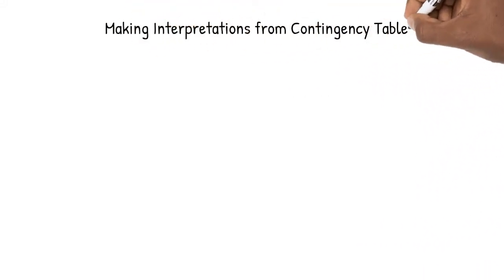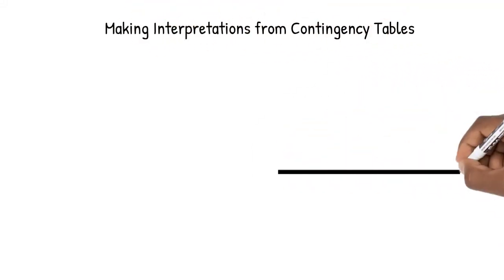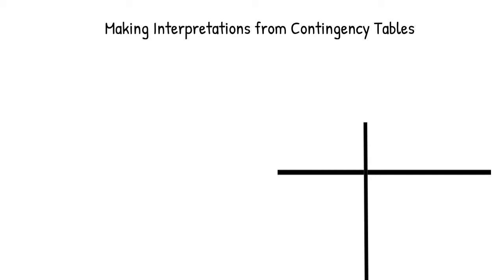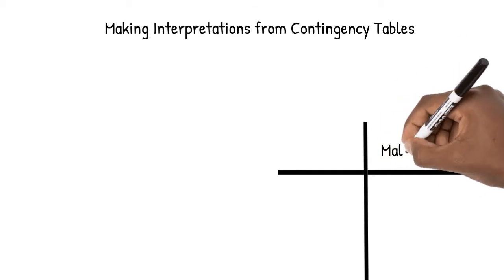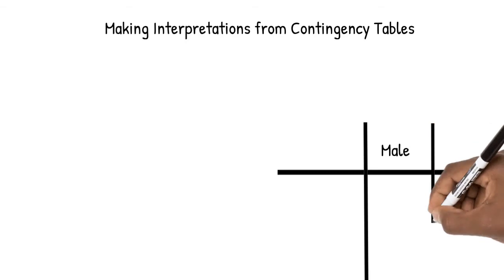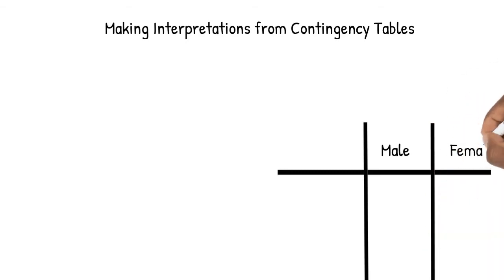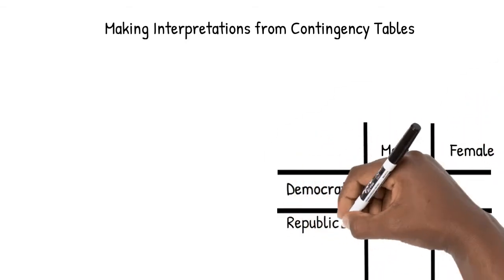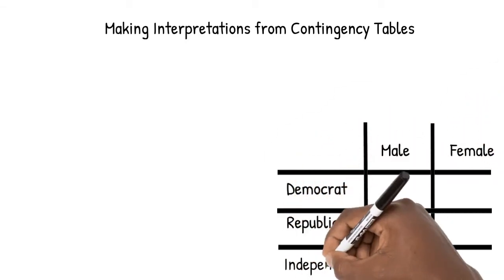In this video, we'll learn how to make interpretations from contingency tables. In a previous video, we looked at the results from surveying a group of people who were either male or female and who were Democrat, Republican, or Independent.